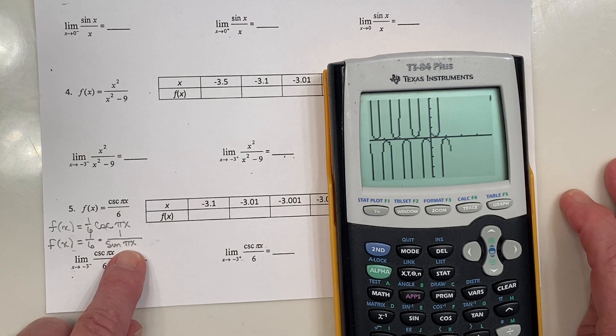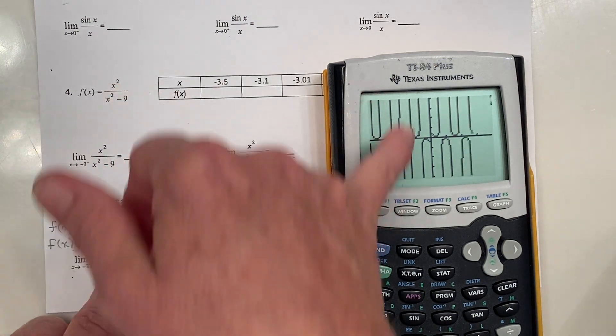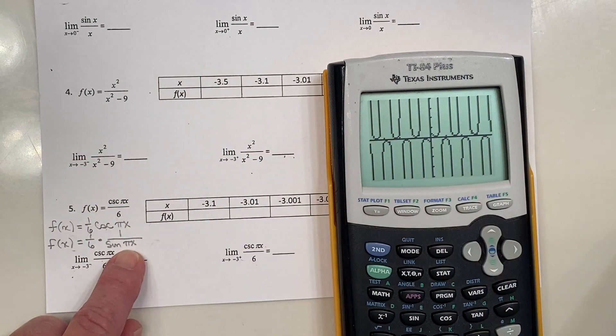Whoa! It appears we have a bunch of vertical asymptotes. You're probably familiar with this from the secant and cosecant graphs back in pre-cal. It appears we have a bunch of vertical asymptotes.